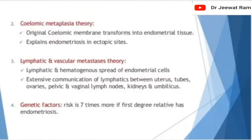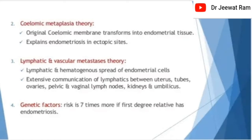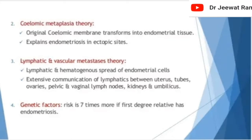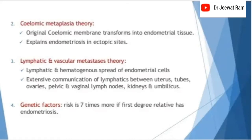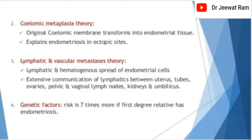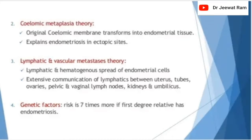Coelomic metaplasia theory: the original coelomic membrane transforms into endometrial tissue, which explains endometriosis in ectopic sites. Lymphatic and vascular metastasis theory: lymphatic and hematogenous spread of endometrial cells occurs through extensive communication of lymphatics between the uterus, tubes, ovaries, pelvic and vaginal lymph nodes, kidneys, and umbilicus.